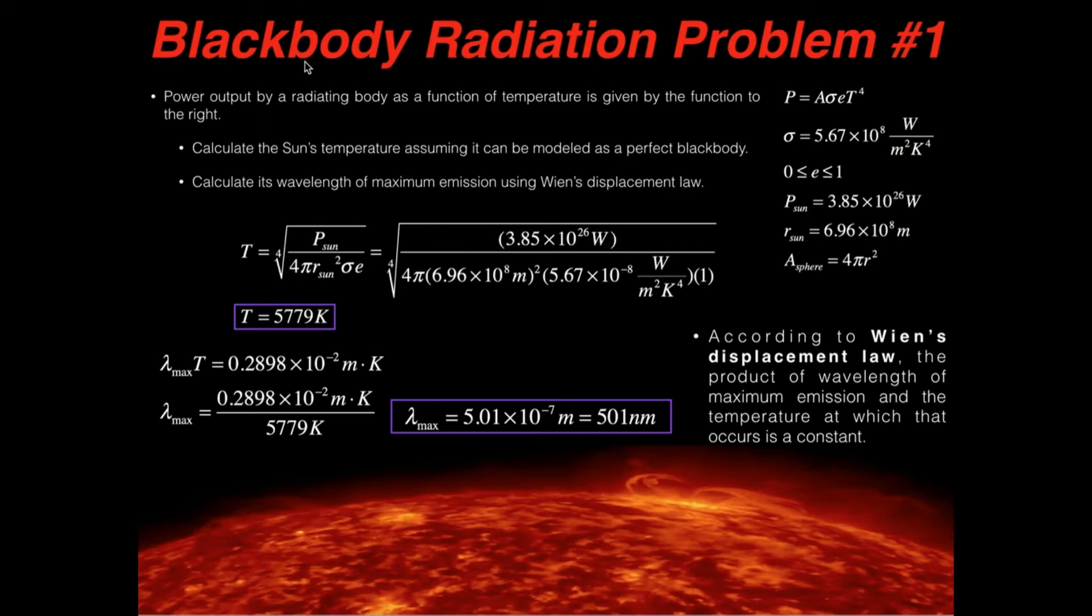All right, in this video we're going to do an example problem for black body radiation. I've actually seen a problem very similar to this in a physical chemistry textbook, and so what we're going to do is we're going to calculate the Sun's temperature, assuming it can be modeled as a perfect black body, and we want to also calculate its maximum emission wavelength using Wien's displacement law.